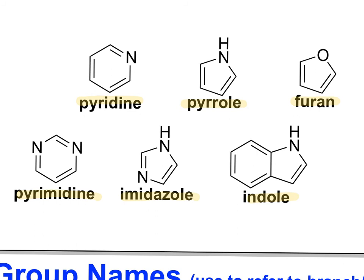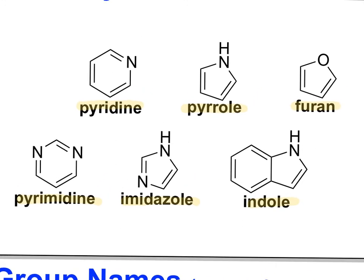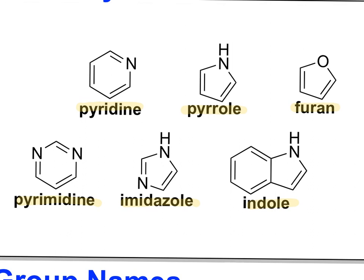This is an exhaustive and complete list of the aromatic heterocycle names that I expect you to know for this class. Any aromatic heterocycle that I expect you to name will exactly match one of the six structures on here. There are a variety of more advanced aromatic heterocycles out there, but these are the ones you need to know for this class.